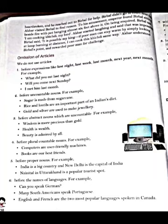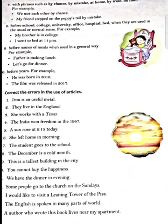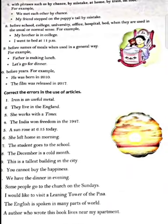Before proper nouns — names of particular things or people — we cannot use articles. And sixth: before the names of languages, we cannot use any article. Like German, English, French — no article before these. And with phrases such as by chance, by mistake, at home, by train, on foot — in these cases we also cannot use any article.